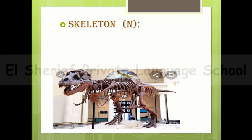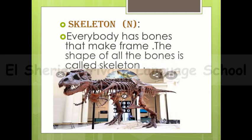The word skeleton. From the picture, you can see the big bones of an old dinosaur that scientists found. Everybody has bones that make a frame, and the shape of all those bones together is called the skeleton. The word skeleton applies to both humans and animals.